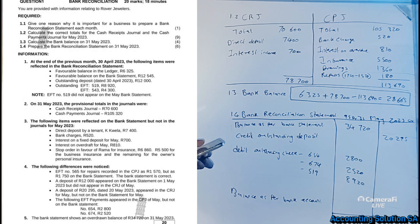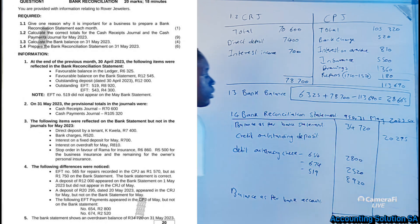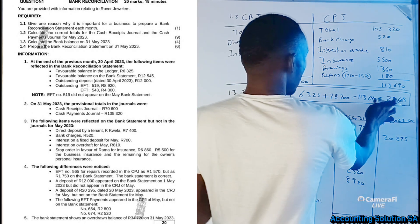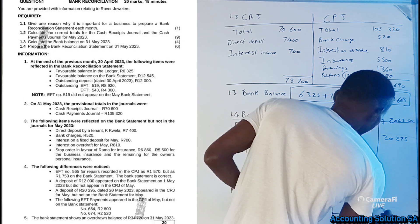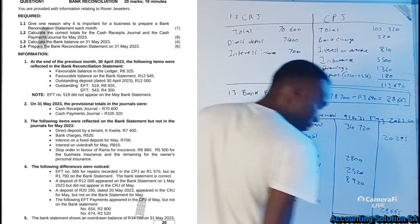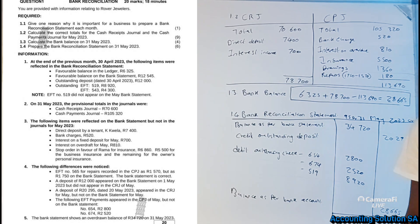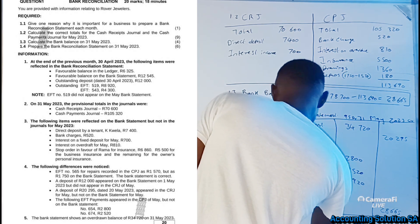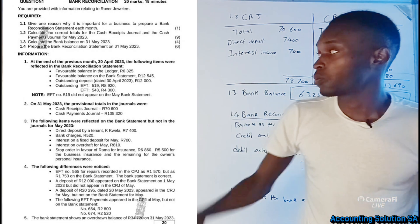The balance as per bank account — we already calculated it: R28,665. Because it is positive it is a cash receipts balance, so when it goes on this side of the reconciliation we credit it at R28,665. You have to make sure the sides balance: what you record on the debit here, you record on the credit there. When you calculate both sides, they are the same — R48,960 on each side.